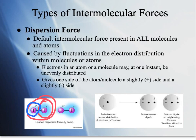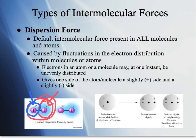That uneven distribution is going to lead to slight negative and slight positive sides of these molecules — not full charges, just slightly. The side with more electrons becomes slightly negative, and the side with fewer electrons becomes slightly positive, because electrons are negatively charged. These are very instantaneous types of charges.